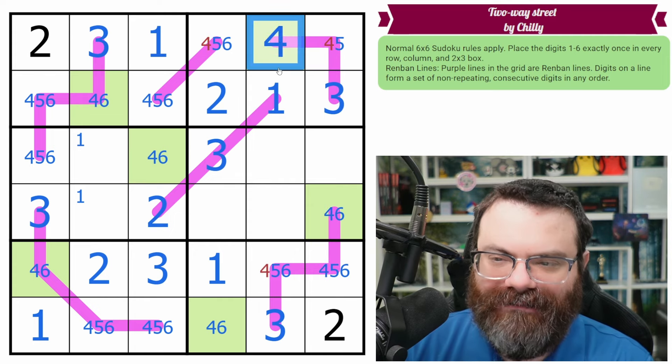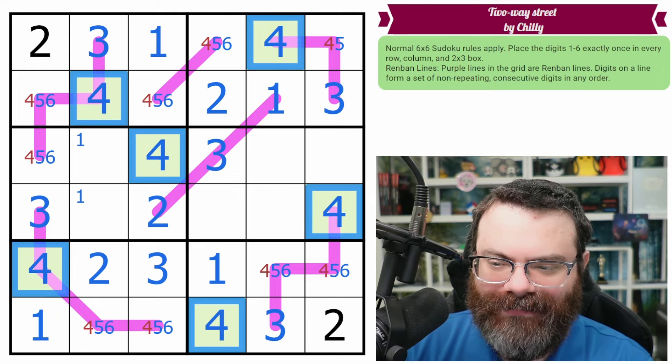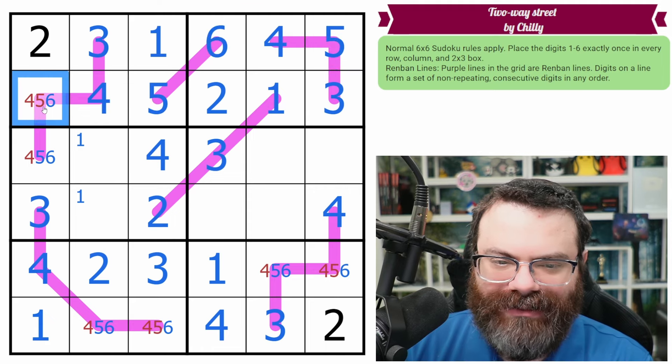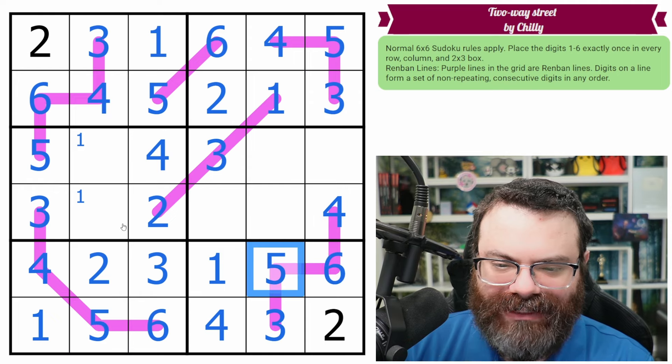So this is the 4. Sorry. Green is 4. I did that completely backwards. Green is 4. Now that's 5. That's 6. 6 goes with 5 on a Renban. That's 6 and 5. That's 6 and 5. That's 6 and 5. All right.